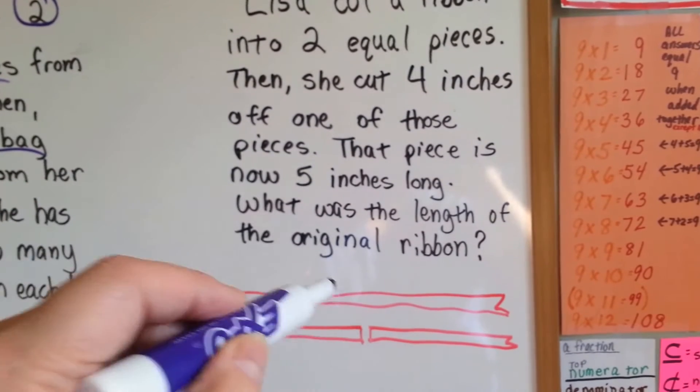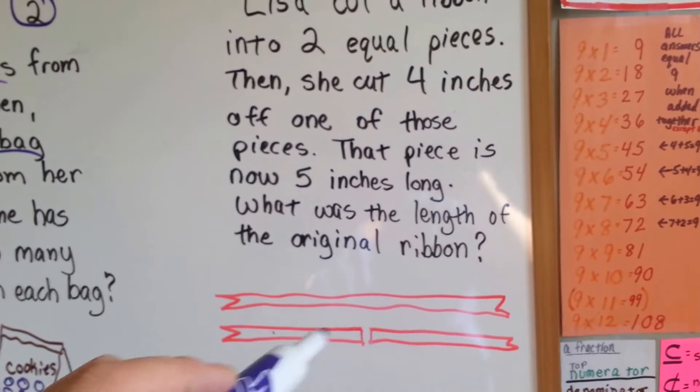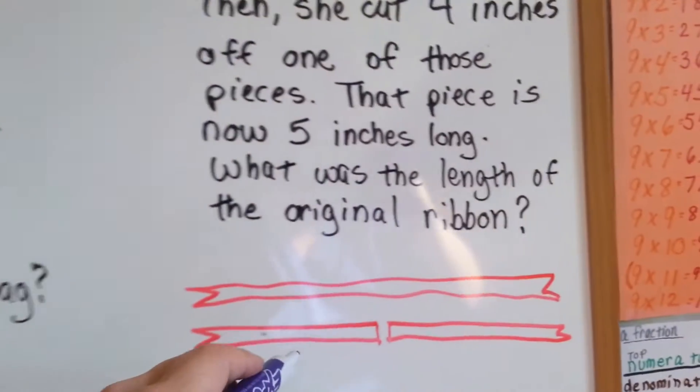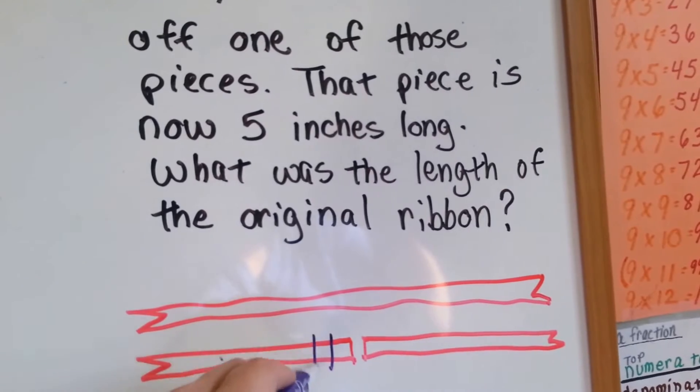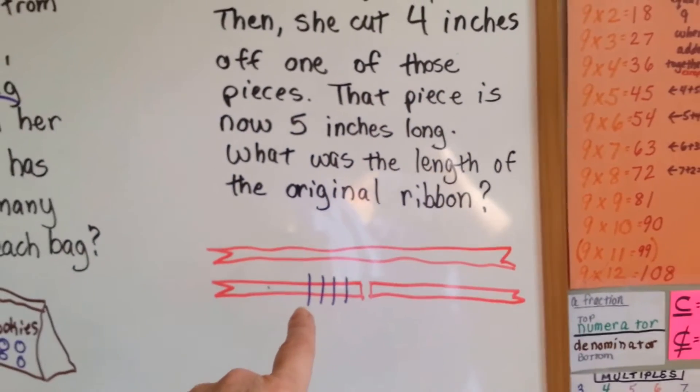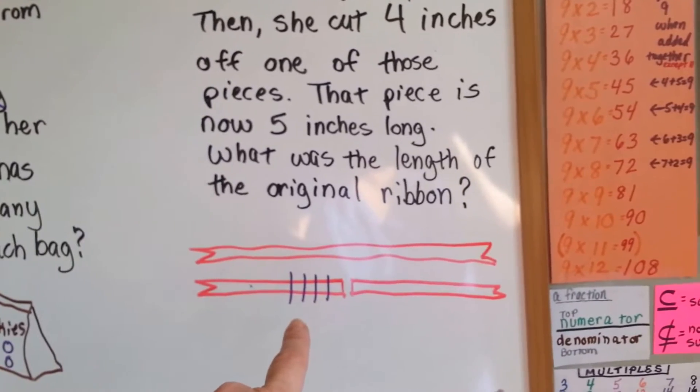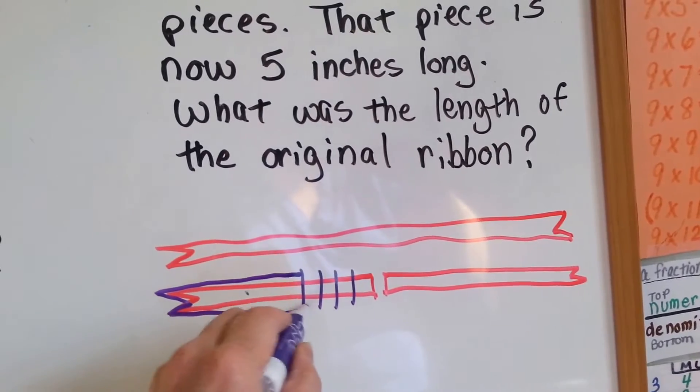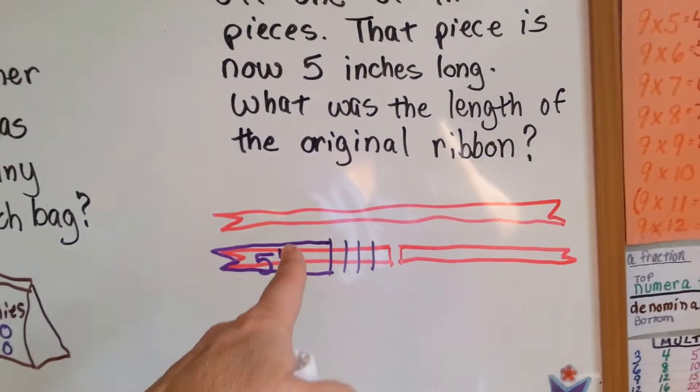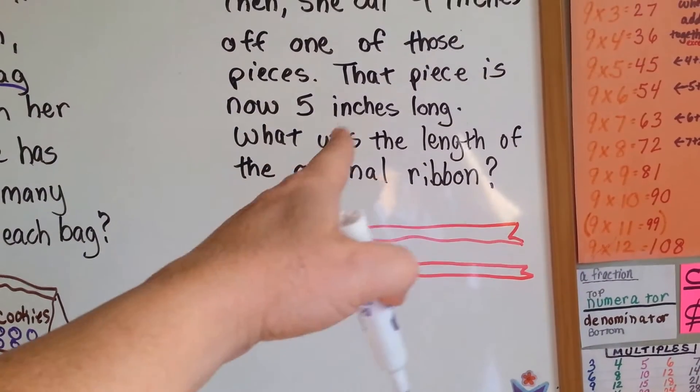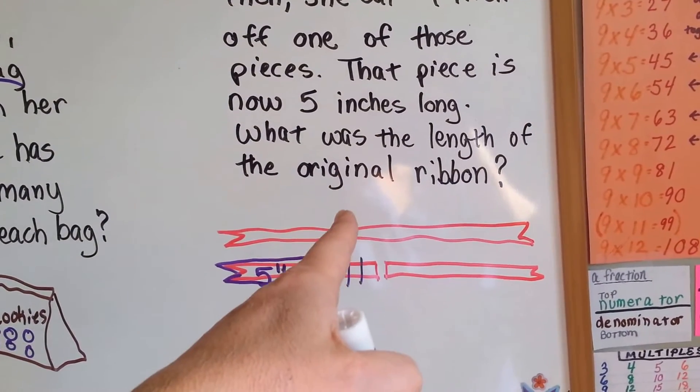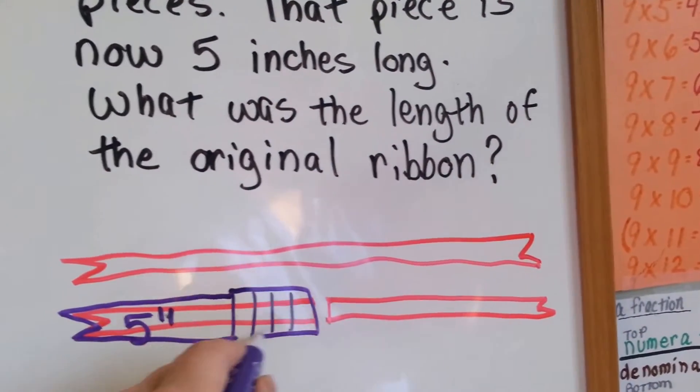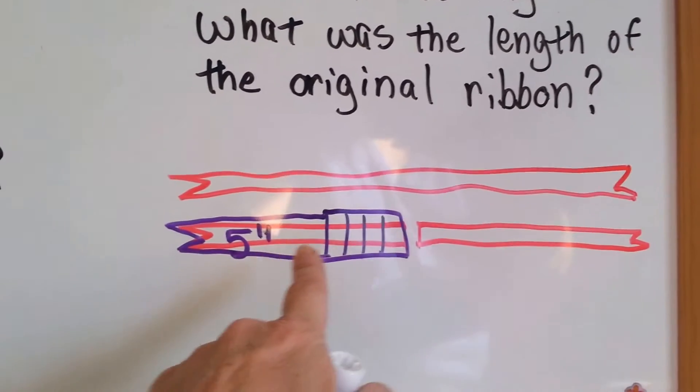Lisa cut a ribbon into... Here's the ribbon. And she cut it into 2 equal pieces. Right here. The second one right here. She cut 4 inches off of one of the pieces. And now that piece that's left is 5 inches long. What was the length of the original ribbon? Okay? Well, we cut 4 inches off, right? See that?